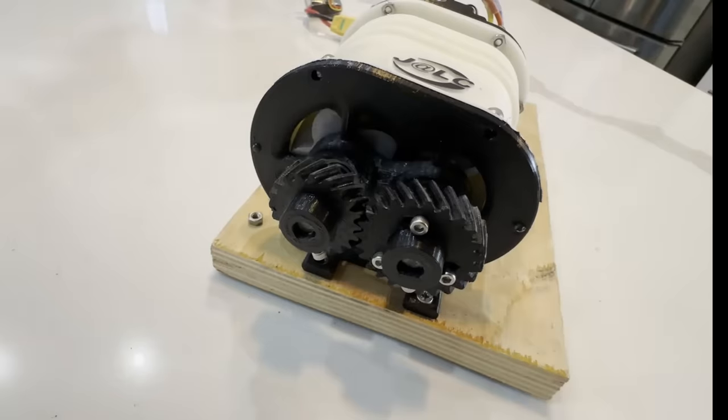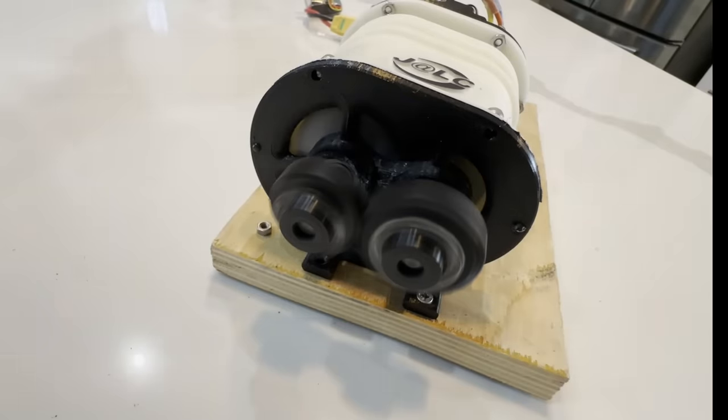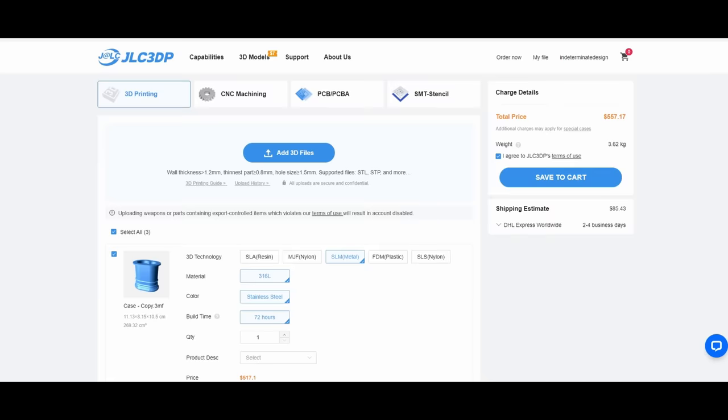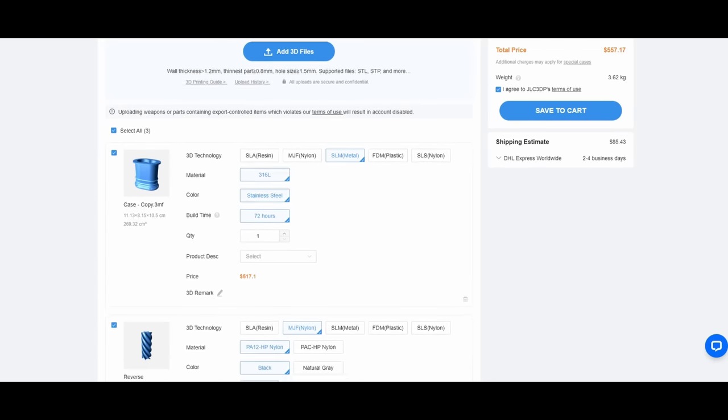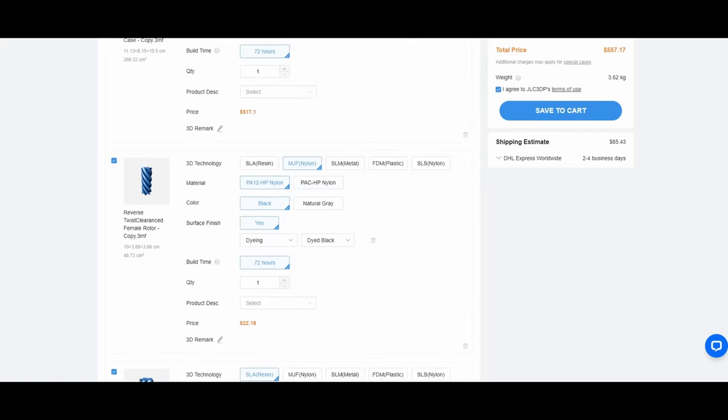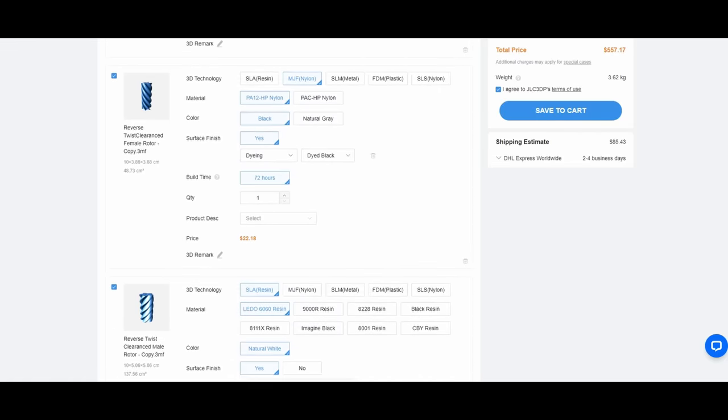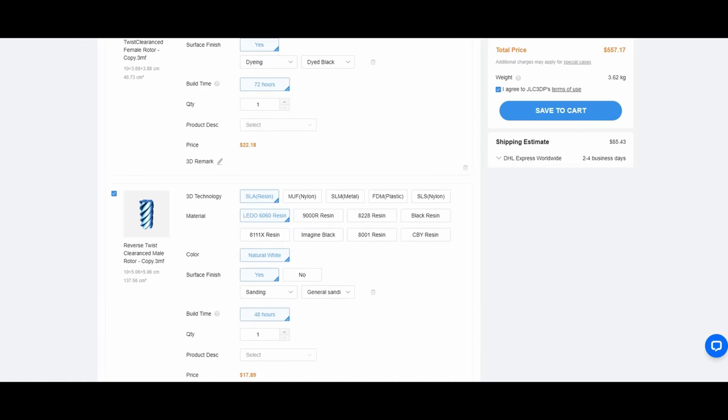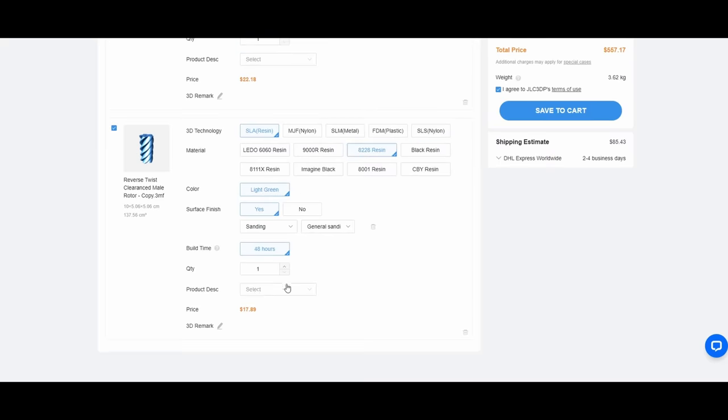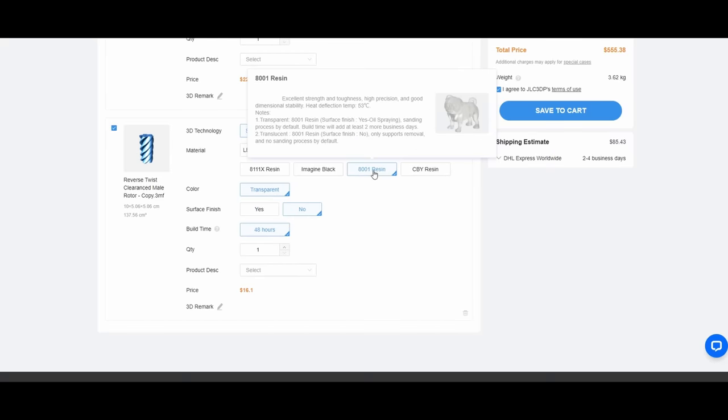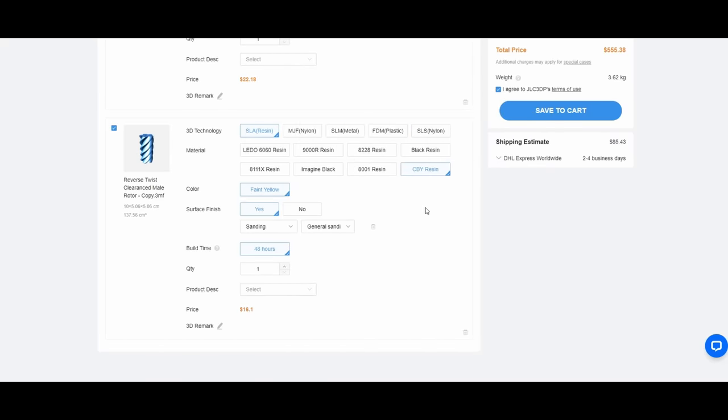The timing gears are completely exposed and super dangerous, so I'm really excited about that. Now, once I had the design done, it was time to have it printed by JLC3DP. The process is very easy. You just upload your models to their website. You can pick from all kinds of 3D printing technologies like FDM, SLA, SLS, MJF, and SLM, like 3D printed metals.